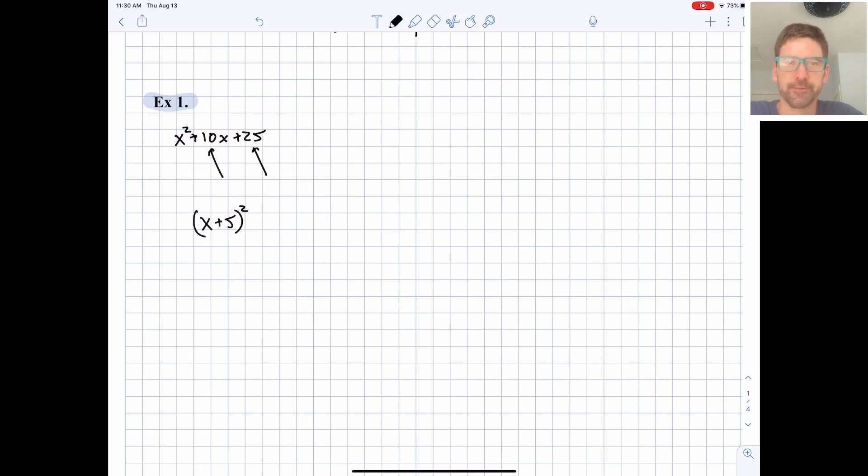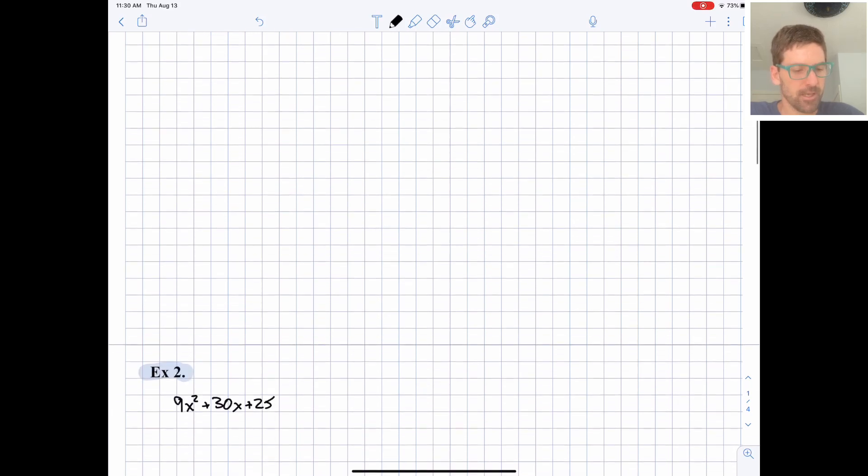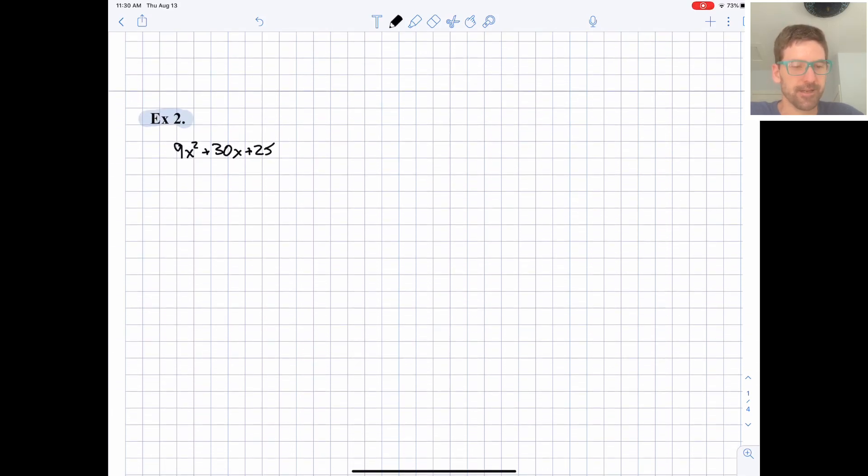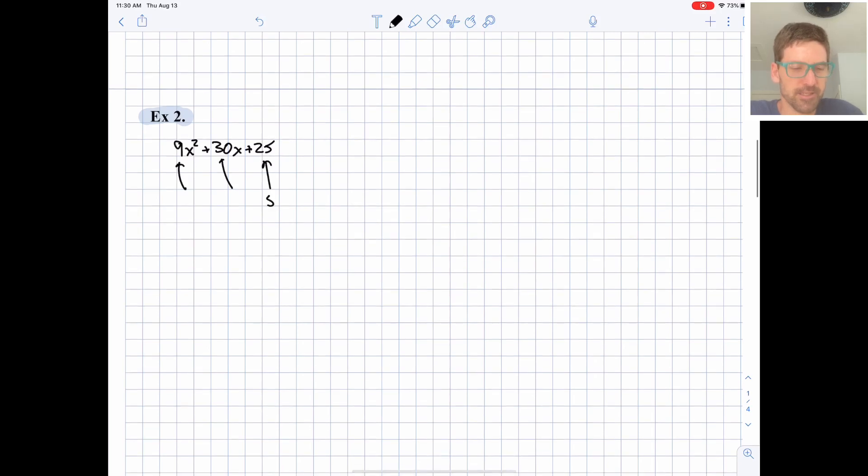Next one just got harder. One reason it got harder is because of that 9 out there, but 9 is a perfect square too, and so is 25. Where did that 30 come from? I think the 9 is confusing things a little bit. But if you have a coefficient in front of the x that's not one, we can still work with it.